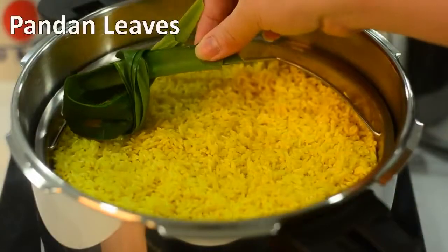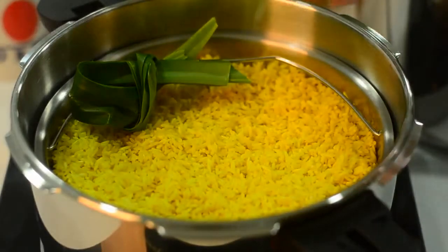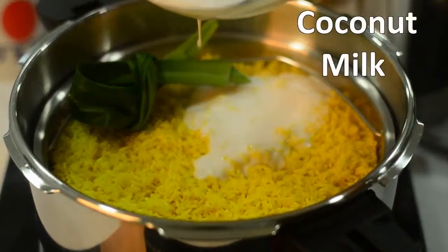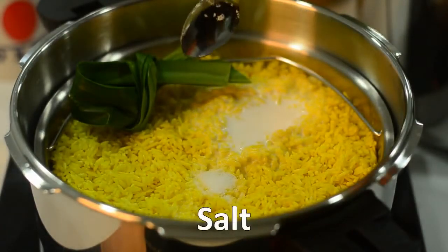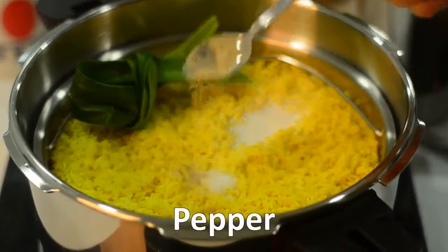Wash a few pandan leaves, then place it on top of the rice. Pour in some coconut milk. Then season the rice with salt and pepper according to your taste and preference.